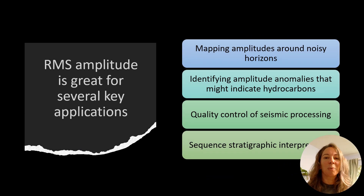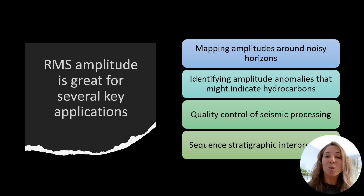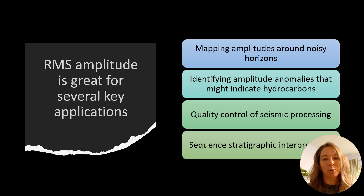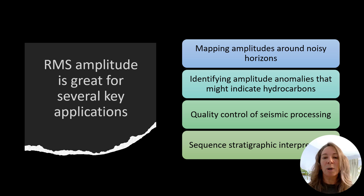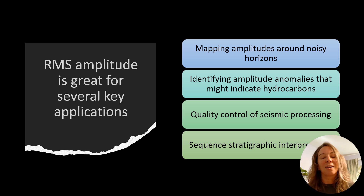RMS amplitude is really valuable in several key areas. First, it's invaluable for mapping higher amplitude packages around noisy horizons, helping cut through noise to reveal the true signal. Second, it's a powerful tool for identifying amplitude anomalies that could indicate hydrocarbon presence. Third, it serves as an excellent quality control check during seismic processing. And finally, it's an essential tool in sequence stratigraphy interpretation, helping us understand depositional patterns and environments.